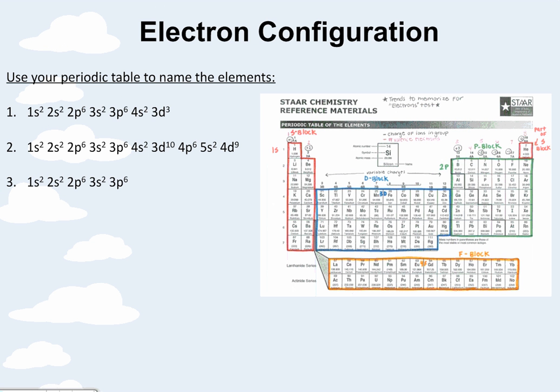Electron configuration. Sometimes they'll give you the configuration, and you have to tell me the element it represents. To do this, it's very easy. Just look at the last one, 3d³. Well, I know that this is 3d. 1, 2, 3 tells me it's vanadium. For the second example, 4d. Well, then this must be 4d. 1, 2, 3, 4, 5, 6, 7, 8, 9. It's silver. And then the last one, 3p⁶. Here is 3p, and 6 is the last one, argon. So those are very easy to do. You just have to look at that very last energy level with the sublevel and the exponent.